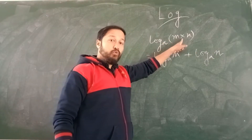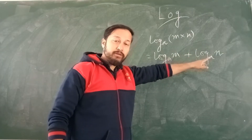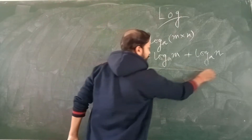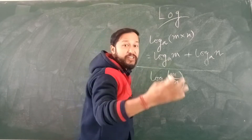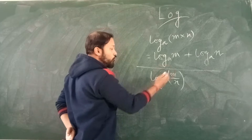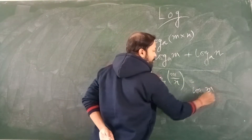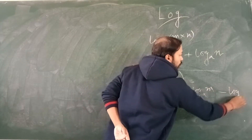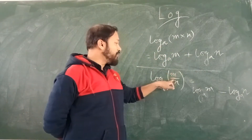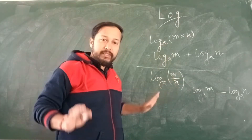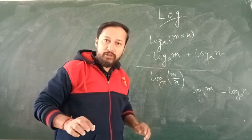So log of M×N to the base A equals log M to the base A plus log N to the base A. Next formula: log of M divided by N to the base A equals log M to the base A minus log N to the base A. When there is multiplication, logs are added; when there is division, logs are subtracted. So two formulas are there. You have to learn and apply those formulas in the sums.